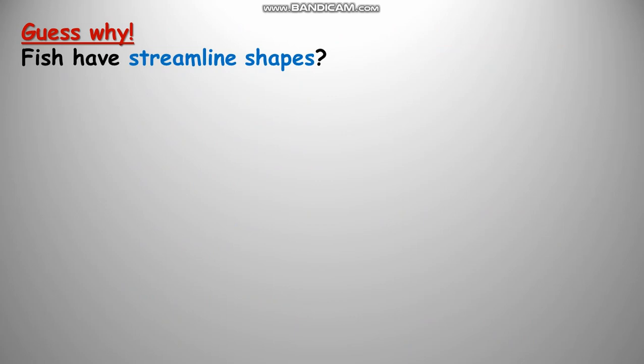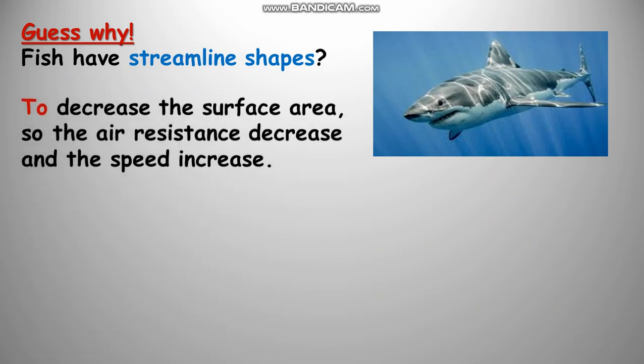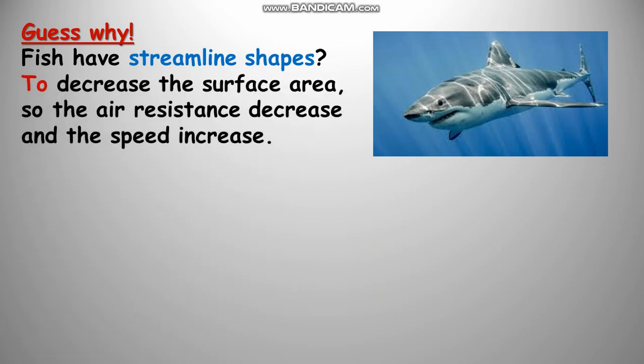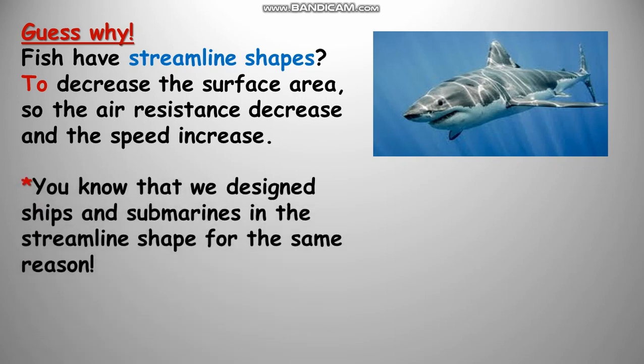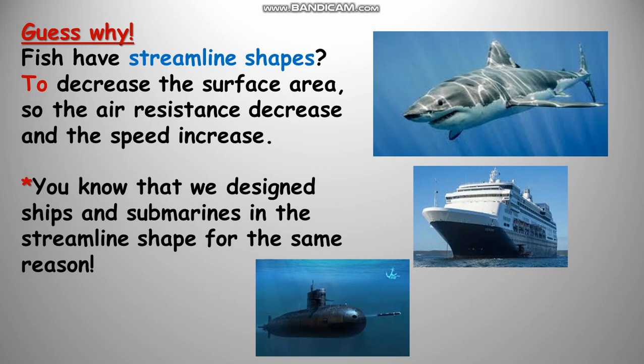The same question: guess why fish have streamline shapes? For the same reason — to decrease the surface area of the fish's body, so the water resistance decreases and the speed of the fish increases. We also design ships and submarines in the same streamline shape design to help increase the speed of these machines.